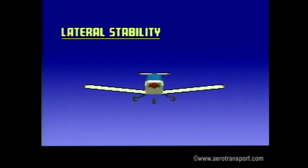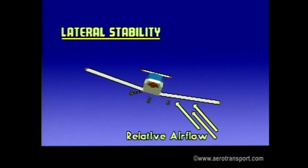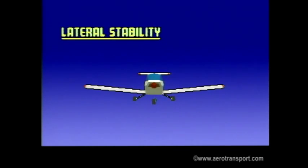Stability in an aircraft is achieved through its design. Lateral stability can be achieved by using a dihedral design, in which the wingtips are higher than the center section of the wing. This causes turbulent air to move to the down wing, exposing it to more airflow than the up wing. Because the down wing also has a higher angle of attack, it produces more lift and the aircraft returns to a level state.